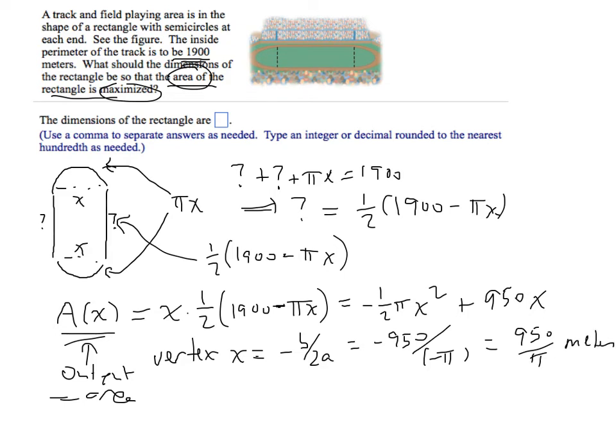Remember, pi is just a number, so there's nothing wrong with that. It looks a little weird, but pi is about 3, so 950 over pi is about 300-some meters. This is not a crazy number, it just has a pi in it.